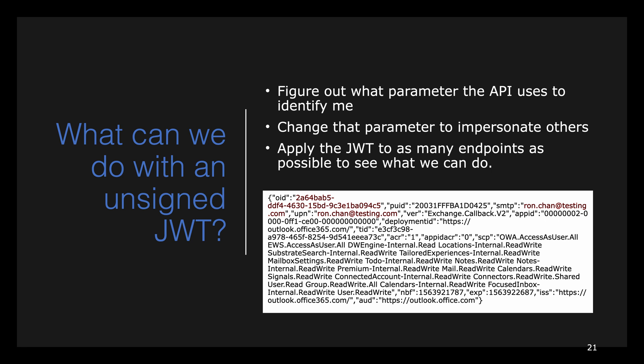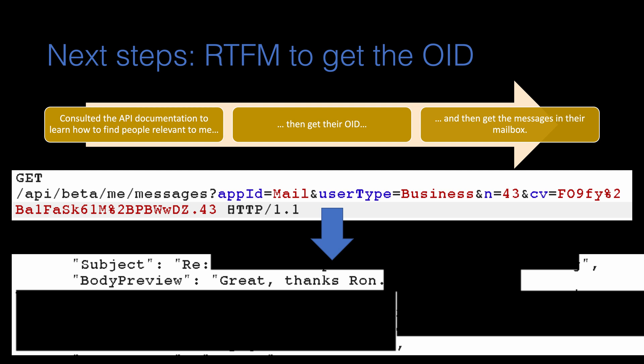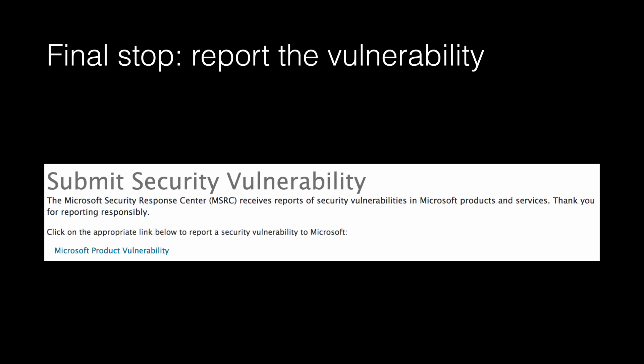To do this, I had to go to the documentation and learn how to find relevant information. The first easy API call I could find was to read my personal email messages. After successfully reading my personal email with a JWT that has an empty signature, I changed the OID in the JWT to my other test user's OID. And surprisingly, I could also see my test user's email messages after swapping the OID value in the JWT. This was clearly a valid security issue because I can basically read any other Outlook user's email messages without user interaction.